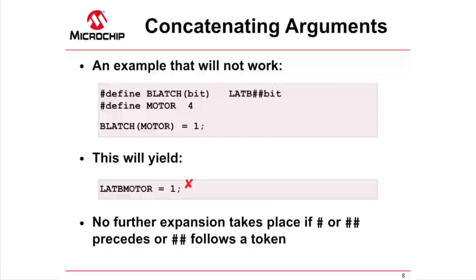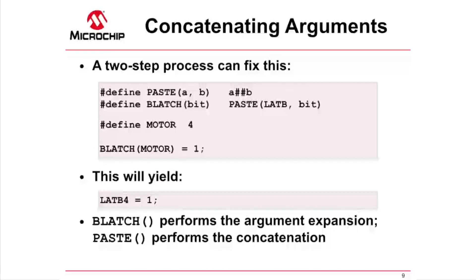Fortunately, we can find a way that allows us to do what we want. So that the expansion of MOTOR is not impeded, we use two macros as shown. One that takes care of the argument substitution and subsequent expansion, and another which takes care of the concatenation. This two-step process means we can concatenate arguments, and the arguments can be macros themselves.